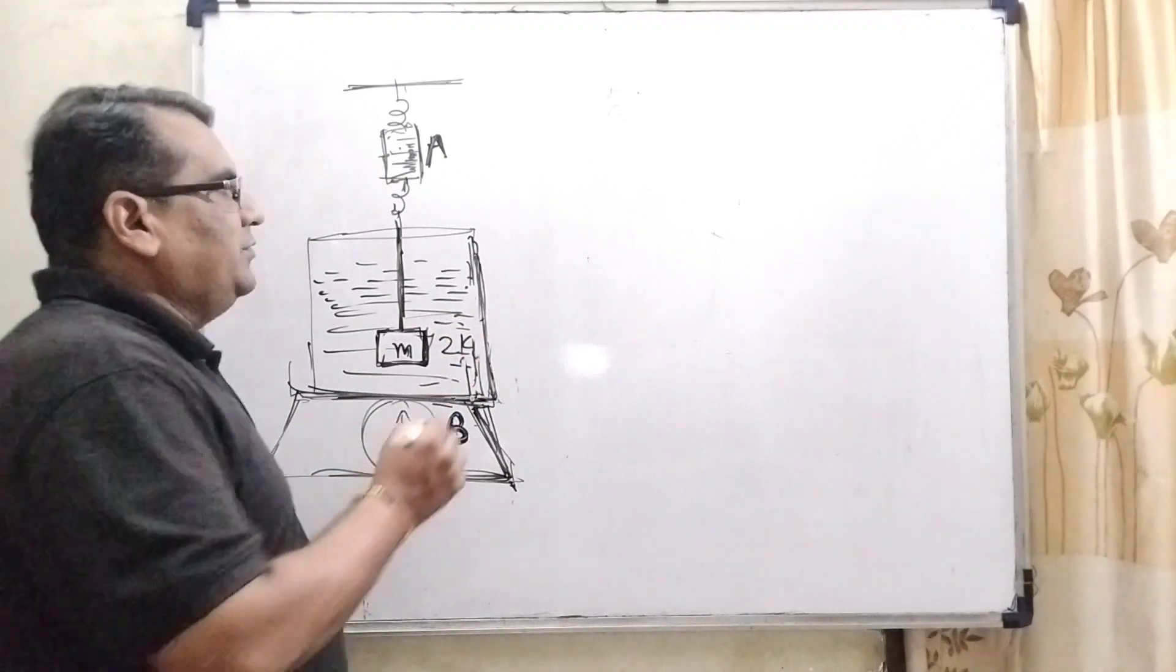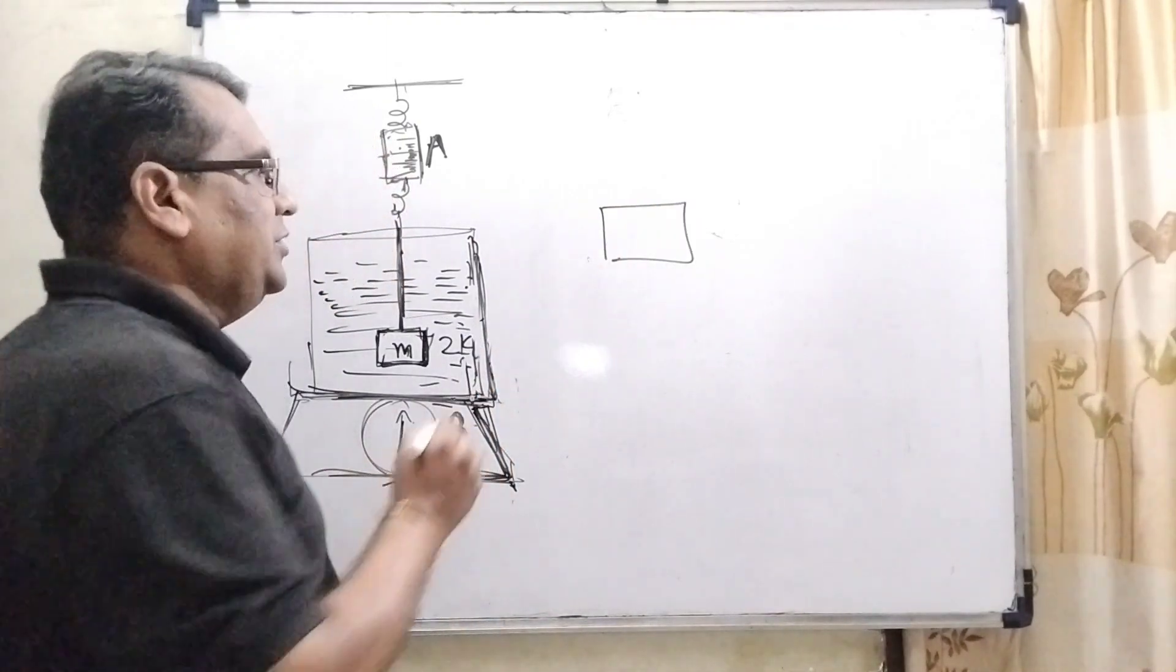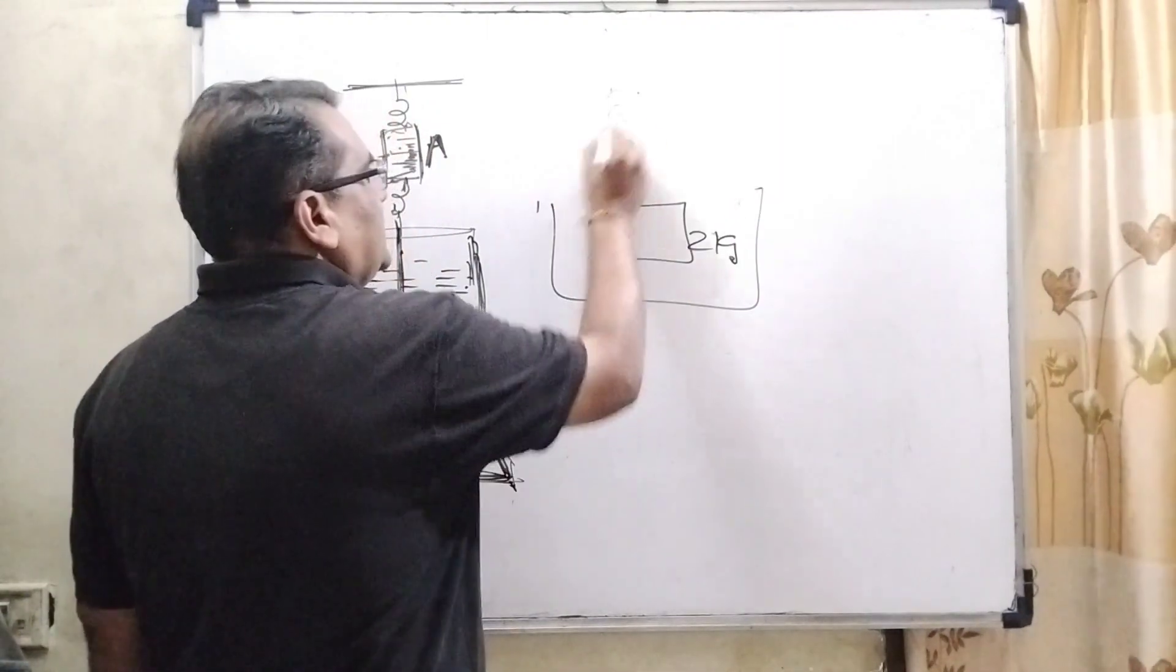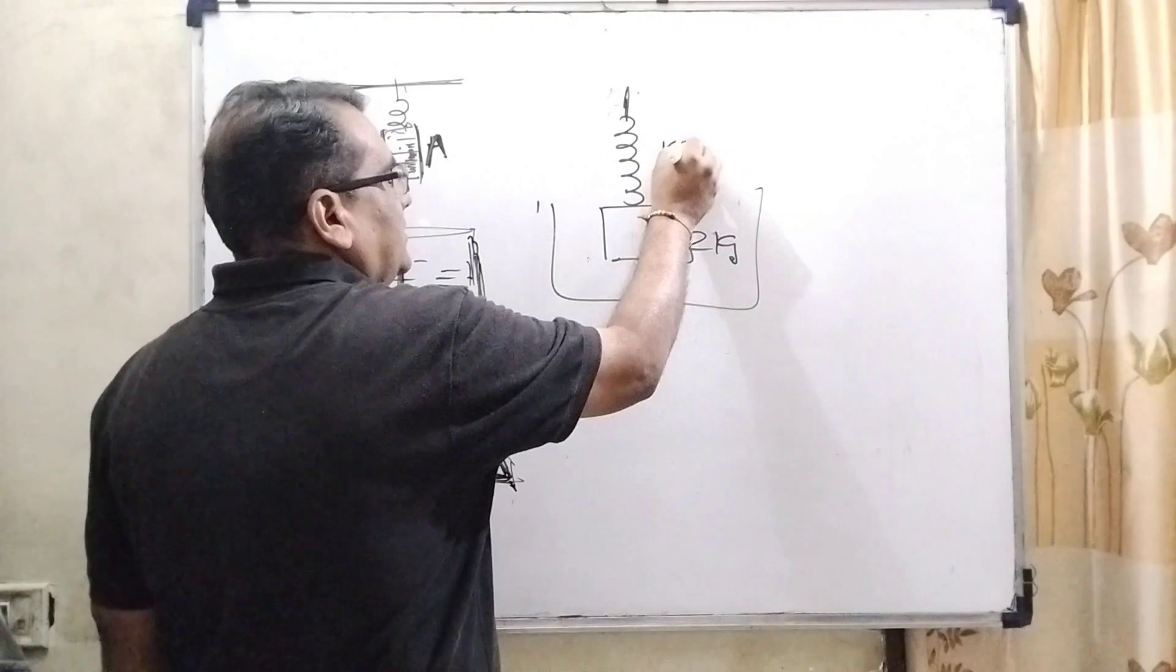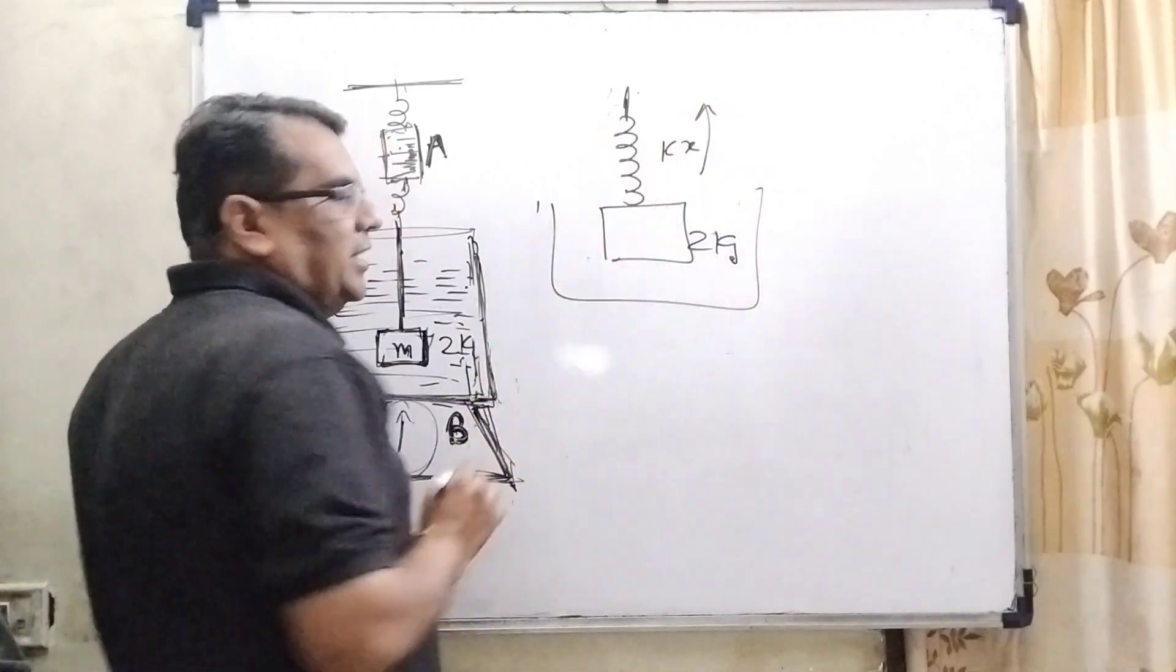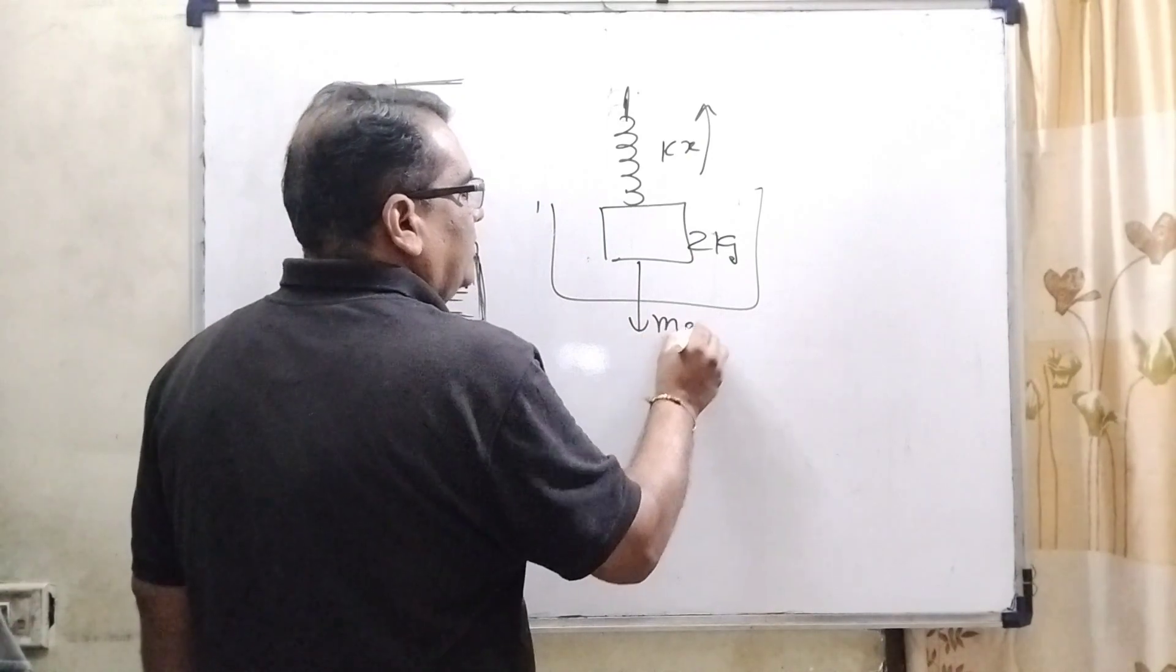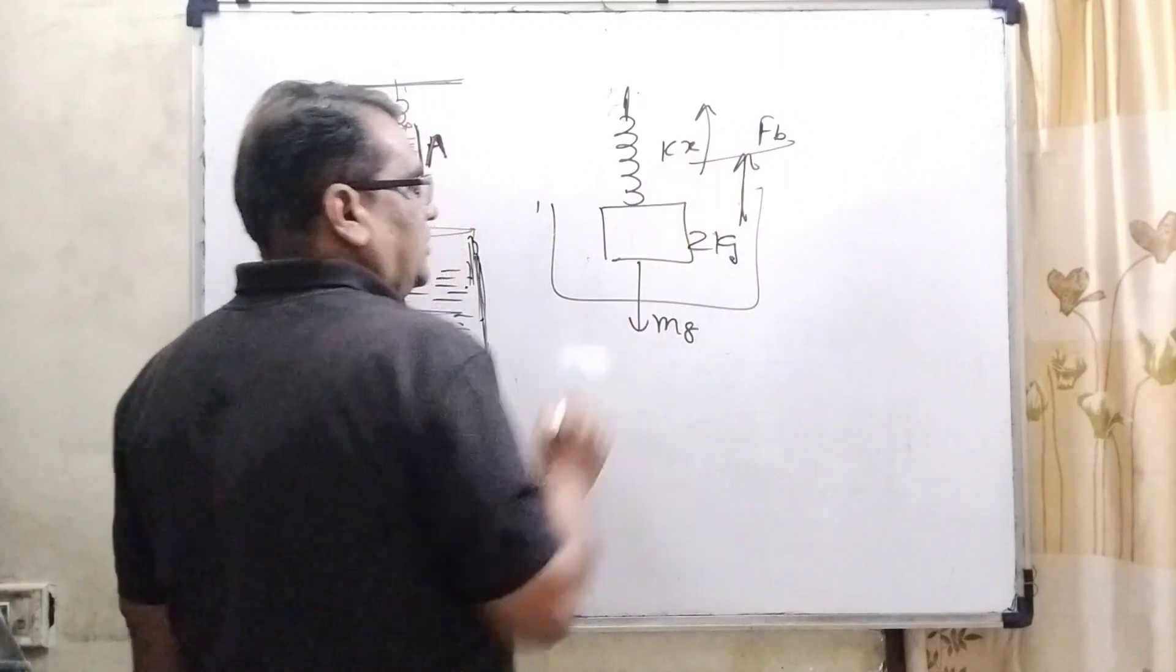So, as we know that when we have to be talking about this block which having the 2 kg and the spring balance. Here spring balance, the spring constant takes that is at upper direction. Mg at downward direction and here the buoyant force is also at upper direction.